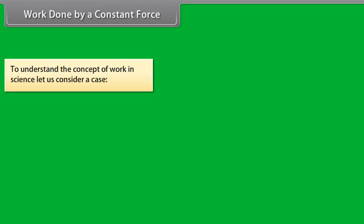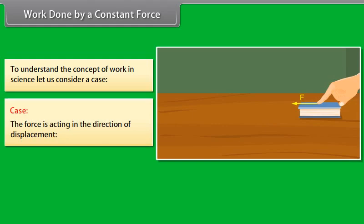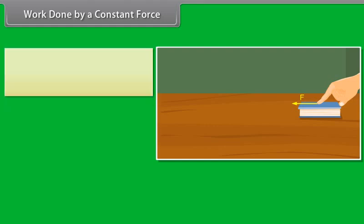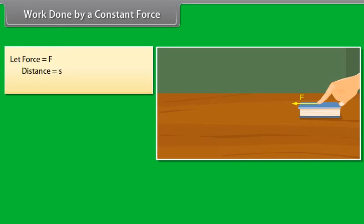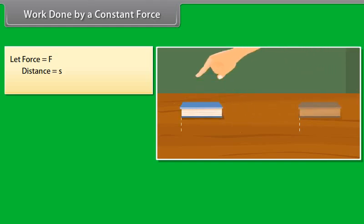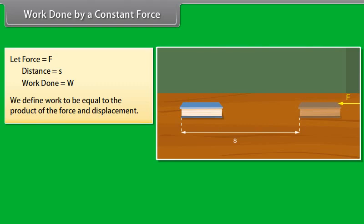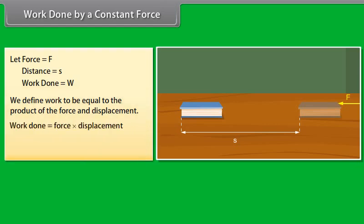To understand the concept of work in science, let us consider a case where the force is acting in the direction of displacement. Let a constant force F act on an object, and let the object be displaced through a distance S in the direction of the force. Let W be the work done. We define work to be equal to the product of the force and displacement. Work done is equal to force into displacement, or W = F × S.